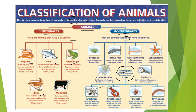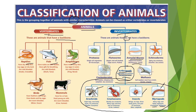Arthropods consist of arachnids, crustaceans, insects, and myriapods — which include centipedes and millipedes. In upcoming videos we will learn all about arachnids, crustaceans, insects, centipedes, and millipedes.